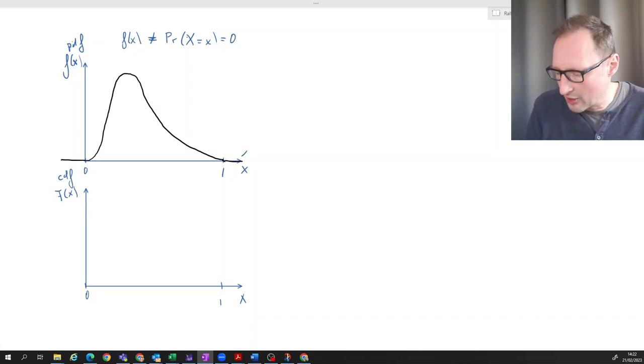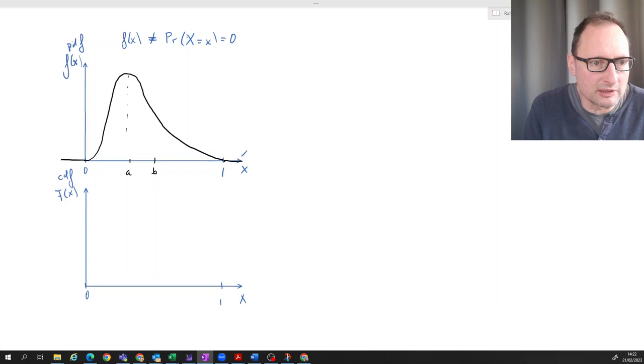Remember, when we had two values here, let's say A and B, then it was the interval which is represented by this area here. Okay, that's what the PDF was.